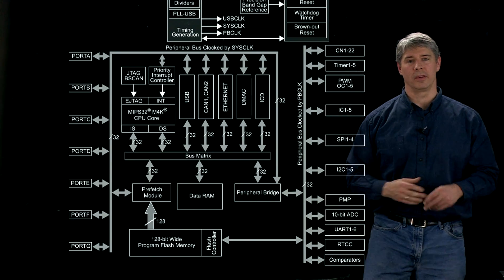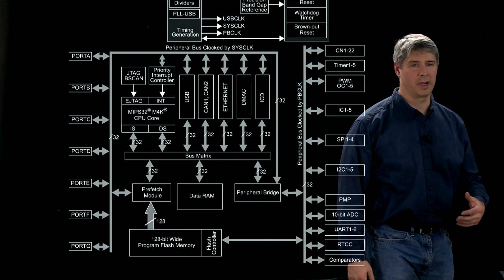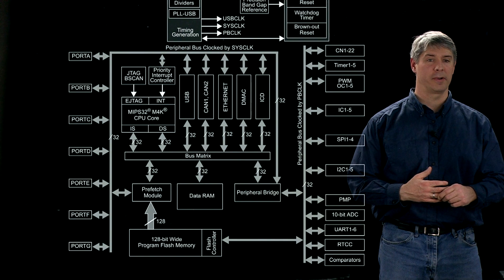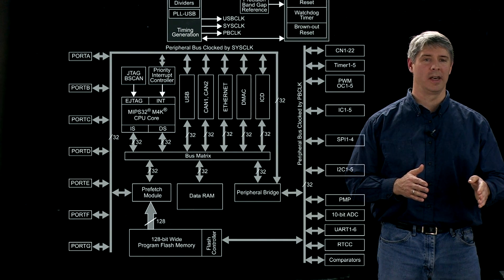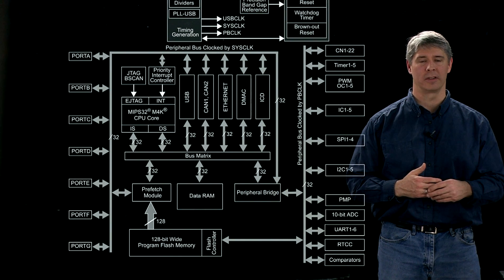Now in addition to these digital input and outputs, there's a number of other peripherals on the PIC32 that are actually clocked by the peripheral bus clock. That clock could run at a lower rate than the system clock, but in our use of it, we're going to keep it at the same rate, 80 megahertz.